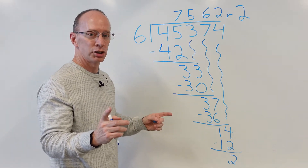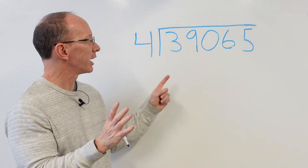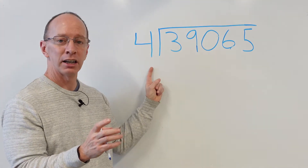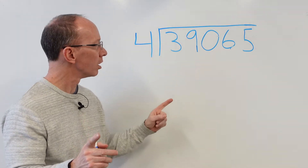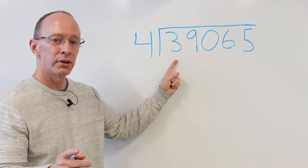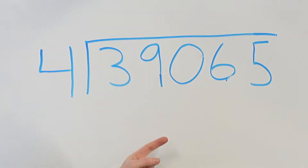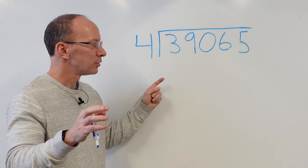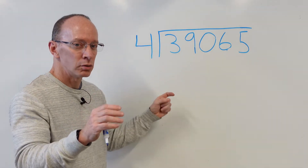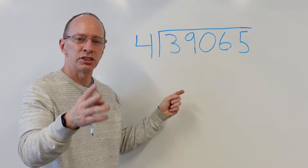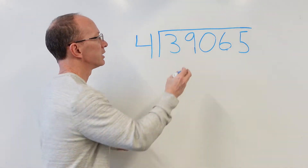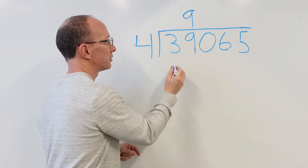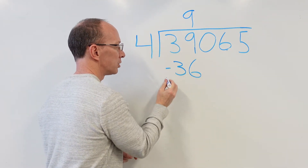You ready to do another one? Let's do it. We've got our next number: 39,065 divided by 4. First of all, can I put 4 into 3? Cannot. Can I put 4 into 39? Yeah. How many times? 4 times 9 is 36. Don't do 4 times 10 — that's too big. Let's just do 4 times 9. That's our next step: 9 times 4 is 36.